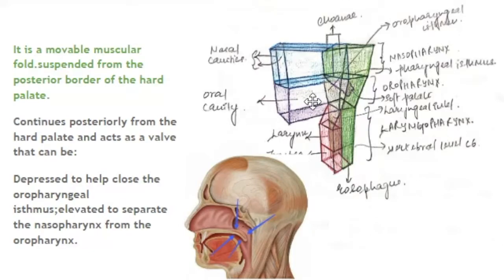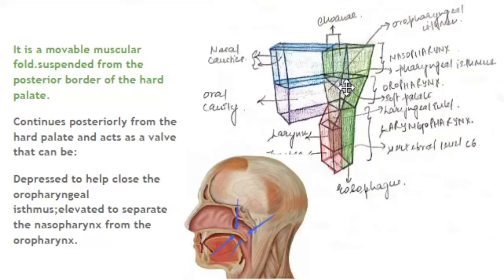Here we have the oral cavity, superior to which is the nasal cavity, and posterior to this is the nasopharynx, and posterior to the oral cavity is the oropharynx. Now what separates the oral cavity and the nasal cavity is a roof which is formed by the palate. The anterior portion of this is formed by the hard palate, and posterior to the hard palate continues the soft movable muscular fold which is the soft palate. The soft palate is suspended from the posterior border of the hard palate, forming the roof of the oral cavity, and it continues posteriorly to act as a valve.